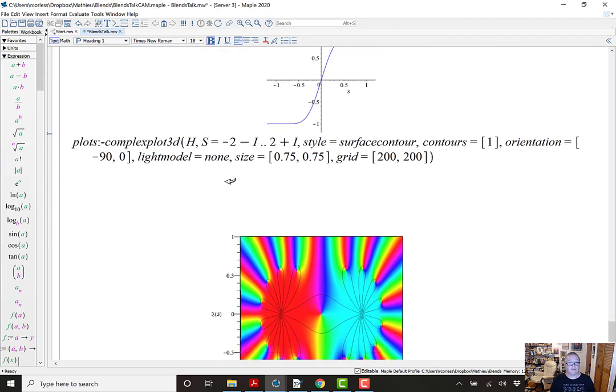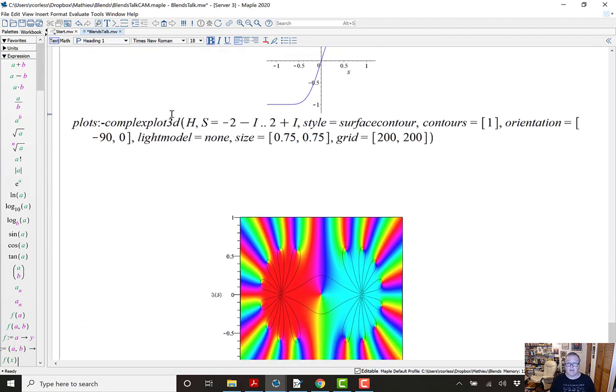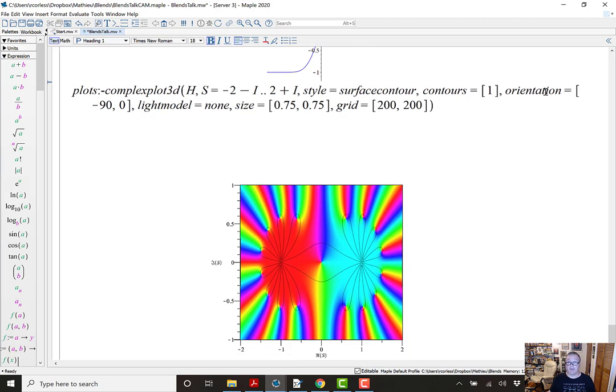What are these colors? The colors are chosen on the argument of the function. This is the blend evaluated at a complex value of s, s equals minus 2 minus i up to 2 plus i. So all over the complex plane in that rectangle. And the coloring by the argument gives you what's known as a phase plot. And you can learn how to interpret that. It's really a very useful kind of plot. You should see the book by Elias Wegert on the use of phase plots in complex variables. I highly recommend that book.